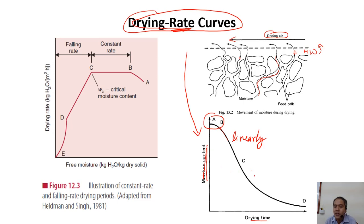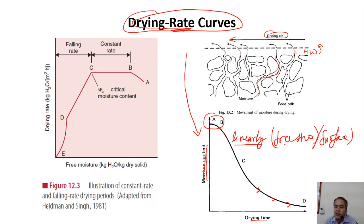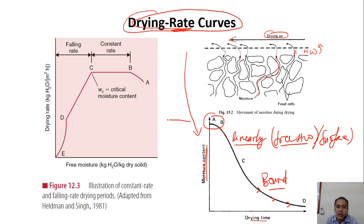From C to D we reduce moisture content but not linearly anymore — it becomes slower and slower. Here we remove free water on the surface, and free water can also be inside but moves out freely. After C, water becomes more bound and difficult to remove. Now when we convert this back into the drying rate curve, what do we see?